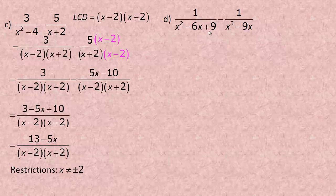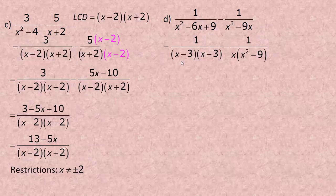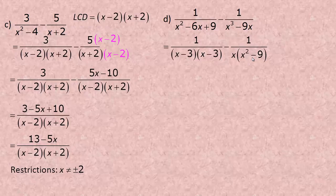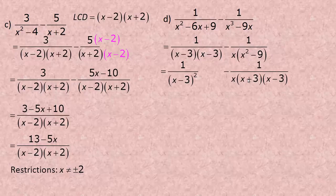The next example has trinomial and binomial denominators, both of which factor. For the trinomial x squared minus 6x plus 9: what adds to negative 6 and multiplies to 9? Negative 3 and negative 3 — so this is a perfect square trinomial, x minus 3 squared. For x cubed minus 9x: common factor an x first to get x times x squared minus 9. That's a difference of squares, factoring into x times x plus 3 times x minus 3.